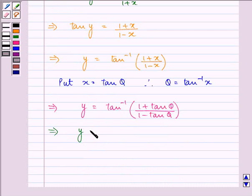That is equal to tan inverse of (1 + tan theta)/(1 - tan theta). So we can write this as tan inverse of tan(theta + pi/4).